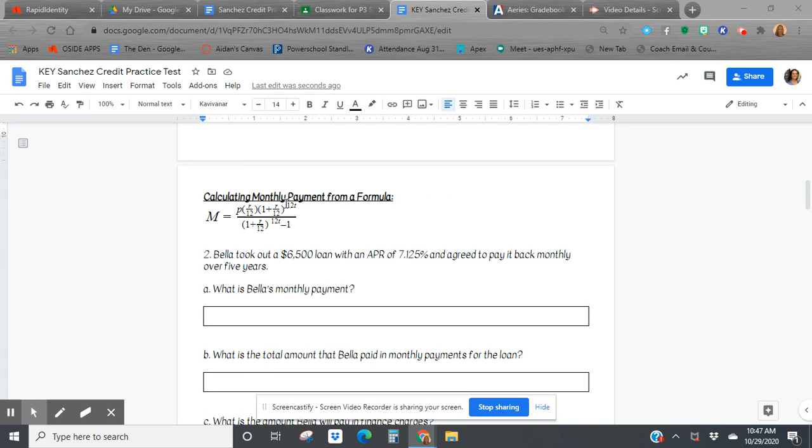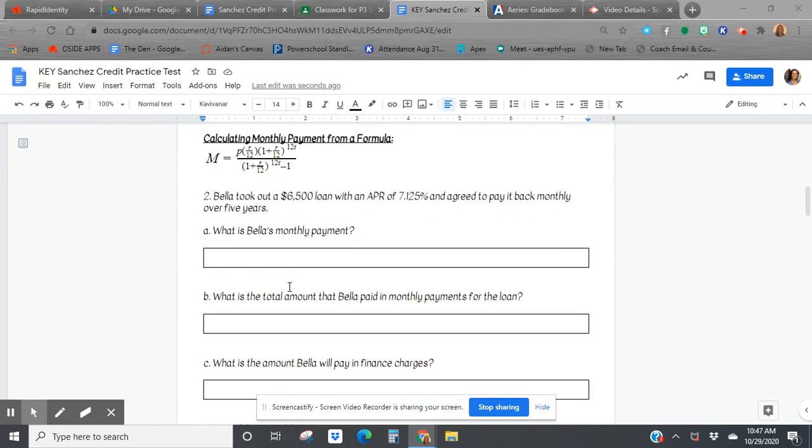Alright, looking at the next one, we're just going to practice calculating monthly payments with the monthly payment formula. So took out a $6,500 loan with this APR and agreed to pay it back monthly over five years.